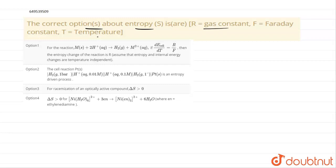First option they given that for the reaction M plus 2H plus gives rise to H2 gas and M plus 2. If delta E cell by dT equal to R by F, then entropy change of the reaction is R. Which option is correct?